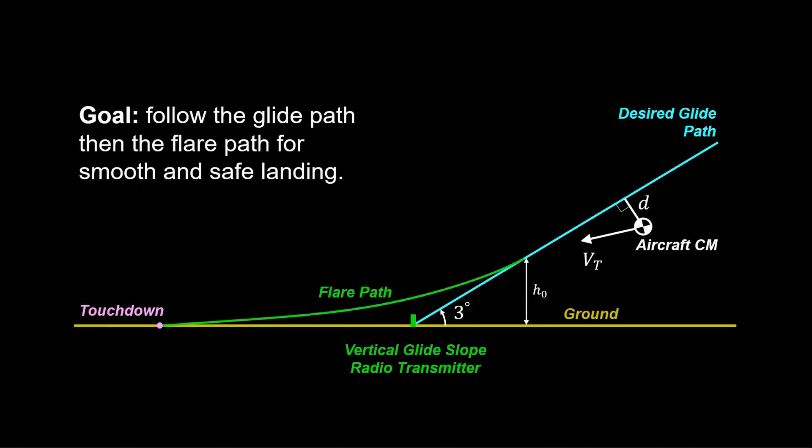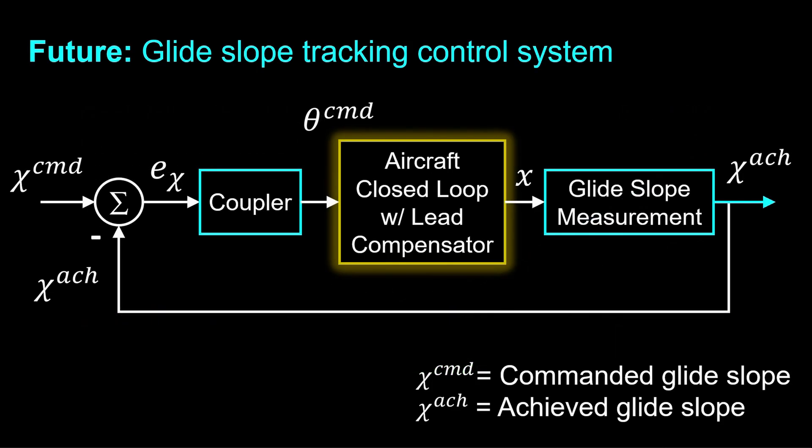We will apply the lead compensator controller developed in this lesson to automatic landing control systems for aircraft. This is part of the glide slope tracking control system, where the glide slope error is translated to a pitch angle command, which is achieved with the lead compensated closed loop aircraft developed in this lesson. The achieved glide slope is fed back and the loop continues so that the desired glide slope is achieved.